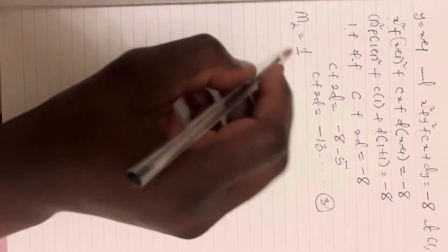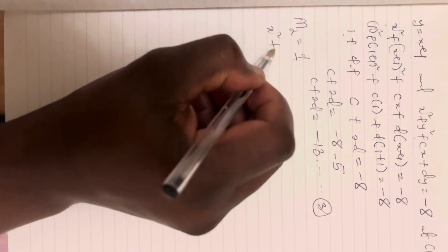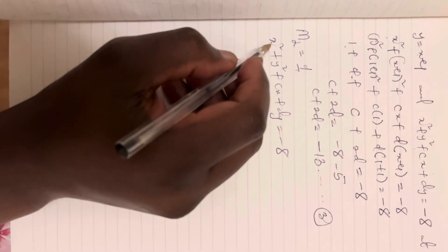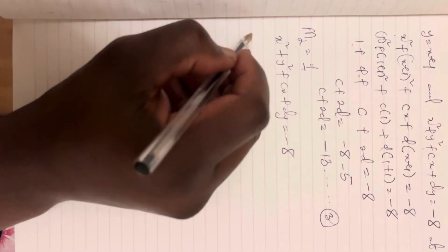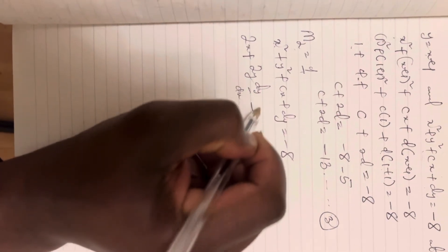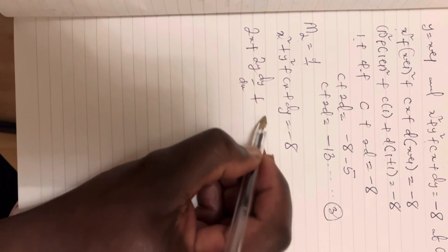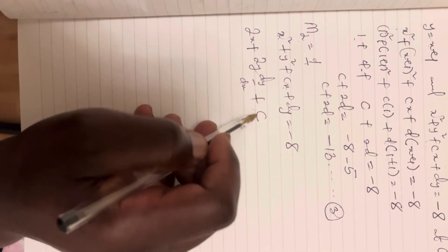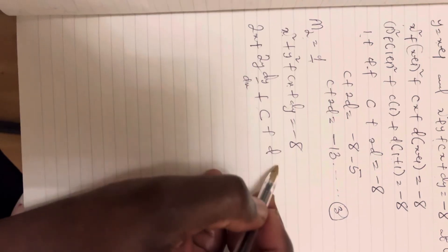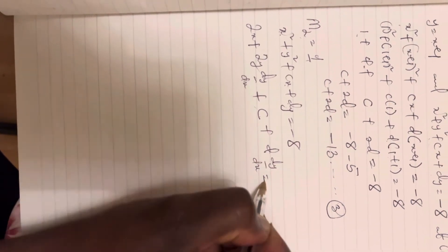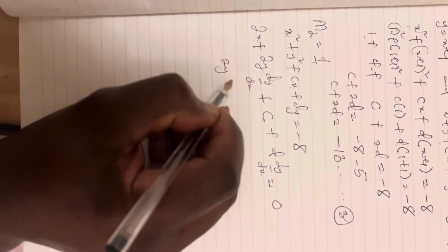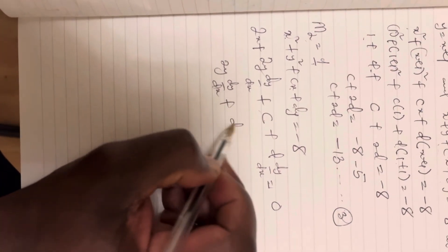We differentiate x² + y² + cx + dy = -8 implicitly. When you differentiate x² you get 2x. When you differentiate y² you get 2y·(dy/dx). When you differentiate cx you get c. When you differentiate dy you get d·(dy/dx), because of the y. Differentiating the constant gives zero.